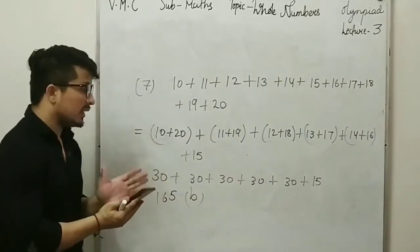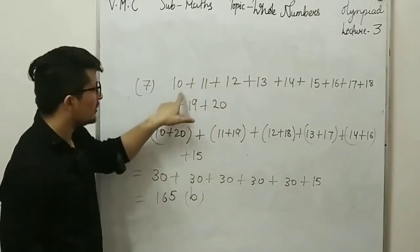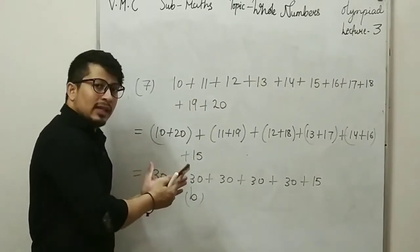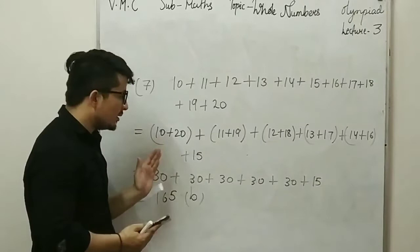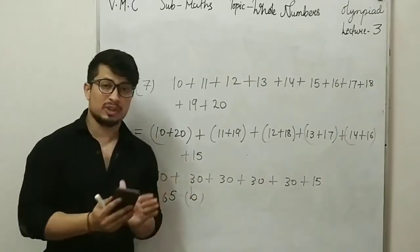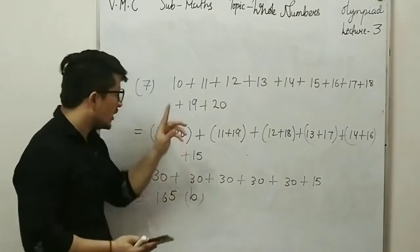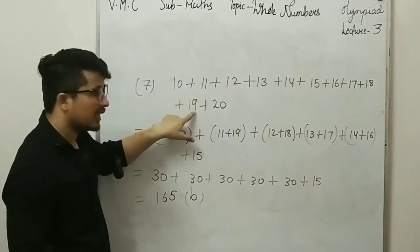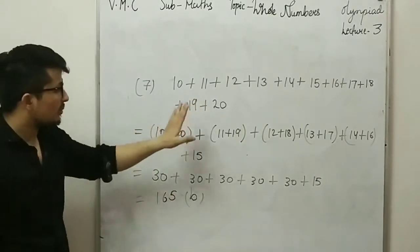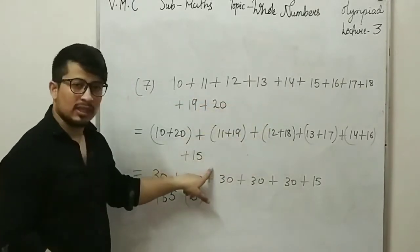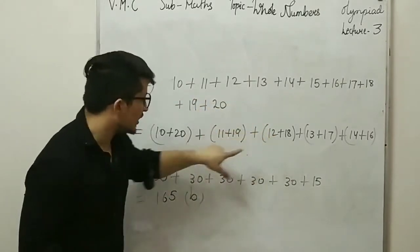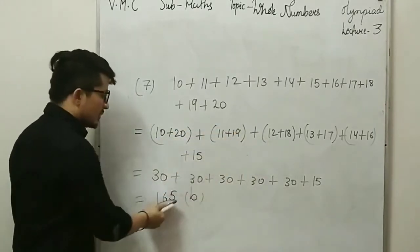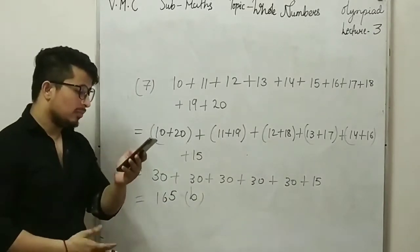This type of calculation is easy if you apply the right method. Instead of adding one by one, you should find numbers that make maximum zeros when combined. I noticed 10 and 20 give 30, and 11 and 19 also give 30, and so on. Arrange them all in pairs, add quickly: 30 five times is 150, plus 15 equals 165 — option A is correct.